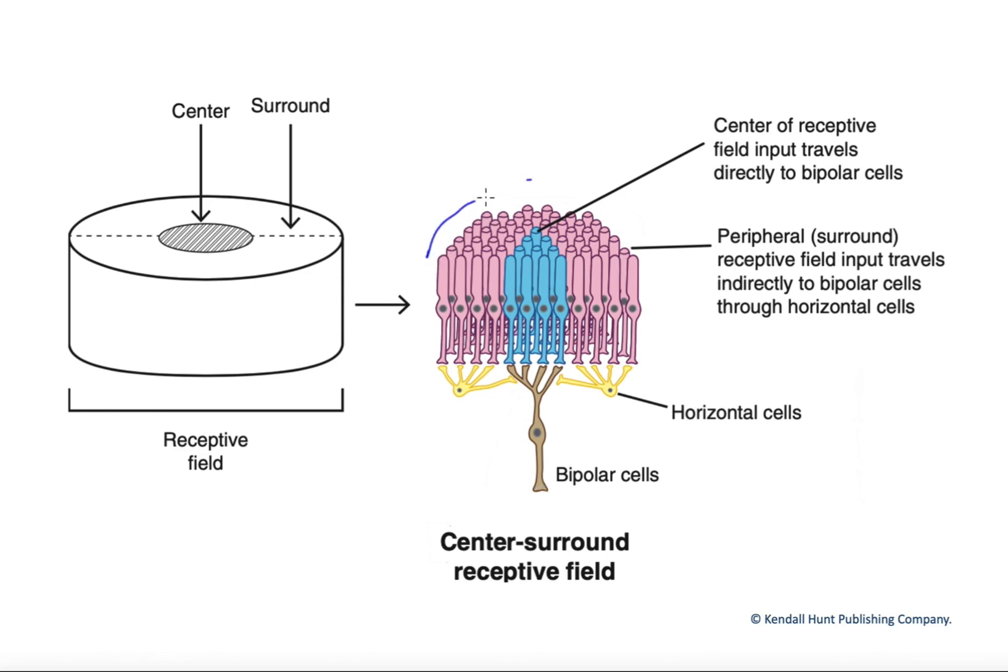This would be the receptive field. This entire span of rods would all send their information through this one bipolar cell.